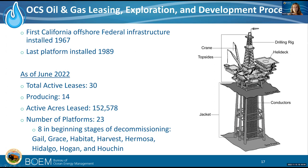Offshore California infrastructure was first installed in 1967, which is platform Hogan, and the newest platform was installed in 1989. There are eight platforms which are listed here that are in the beginning stages of decommissioning. On the right, the simplified platform diagram shows conductors or wells, and I wanted to point out the topsides — the portion of the facilities above sea level — and the jacket, which goes from the sea floor to sea level.